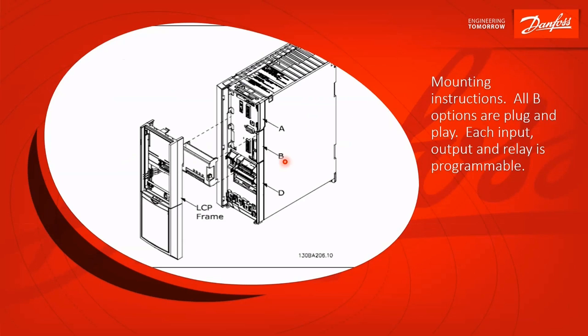For the B slot options, you take off the cradle and the keypad. The card plugs right into here, and it's plug and play. Once you plug that in, you just go into the drive's parameters to configure those inputs, outputs, and relays to do what you want to do.